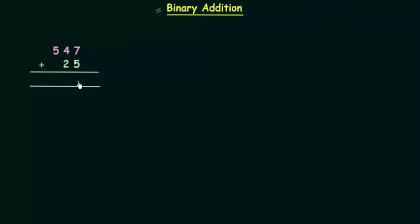7 plus 5 is 12, so we have 2 here and 1 will go as carry. 1 plus 4 is 5, 5 plus 2 is 7. As there is 7 we have no carry, so carry is 0, and 0 plus 5 is 5. So when you add these two decimal numbers you will get 572.